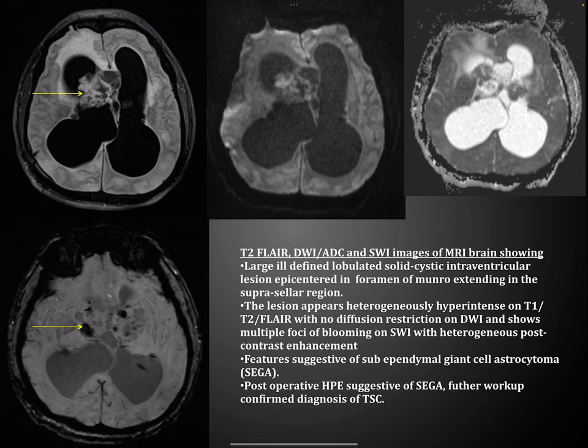Here is a case showing T2 FLAIR, diffusion weighted imaging and susceptibility weighted axial images of brain, demonstrating a large ill-defined lobulated solid-cystic intraventricular lesion at the foramen of Monro extending into the suprasellar region. The lesion appears heterogeneously hyperintense on T1 and T2 FLAIR with no diffusion restriction and shows multiple foci of blooming on susceptibility weighted imaging with heterogeneous post-contrast enhancement. Features suggest subependymal giant cell astrocytoma — SEGA. Post-operative HPE confirmed SEGA and further workup confirmed diagnosis of TSC.